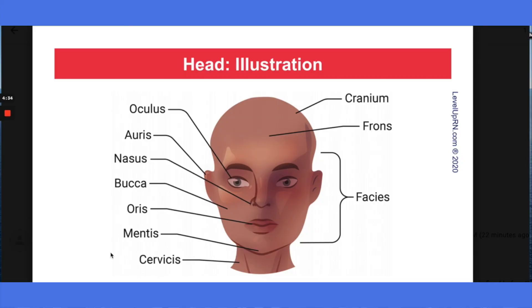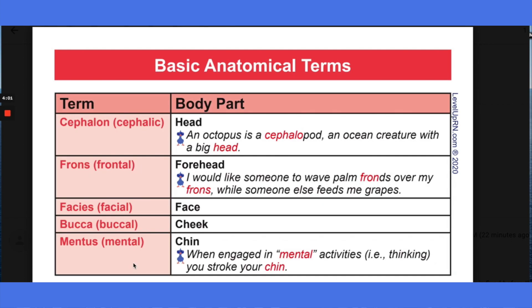The second volume of this deck covers basic anatomical terminology, medical acronyms, and prescription abbreviations. Let's go over some examples of cards within this volume. In the anatomical terms section, we have some illustrations to help you visualize what body parts these terms are referring to. In addition, we've included these terms in a table with the definition of the body part that they refer to, and of course we've included as many Cool Chicken hints as we could to help you remember these terms.